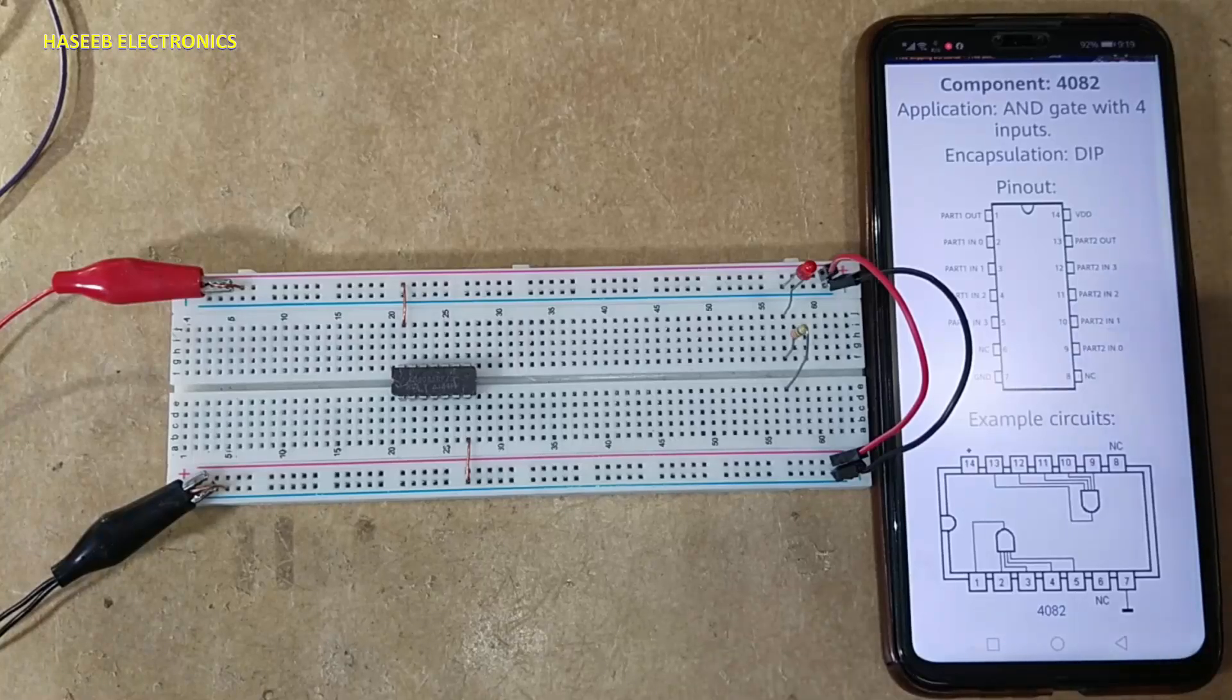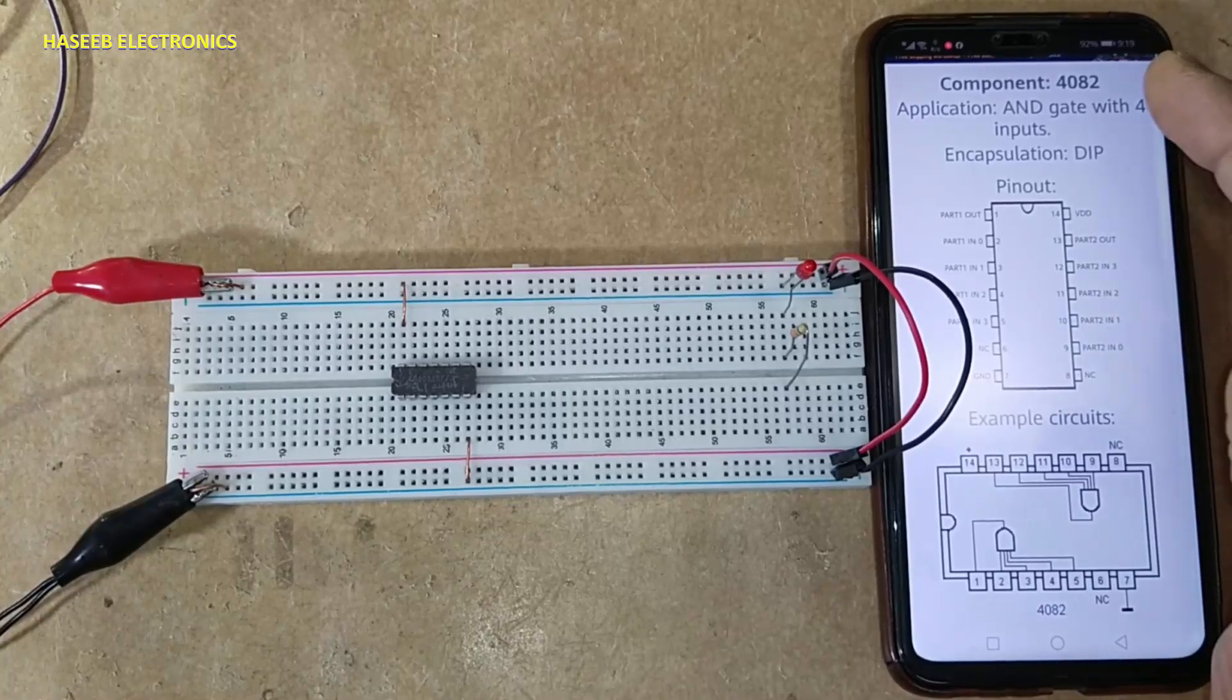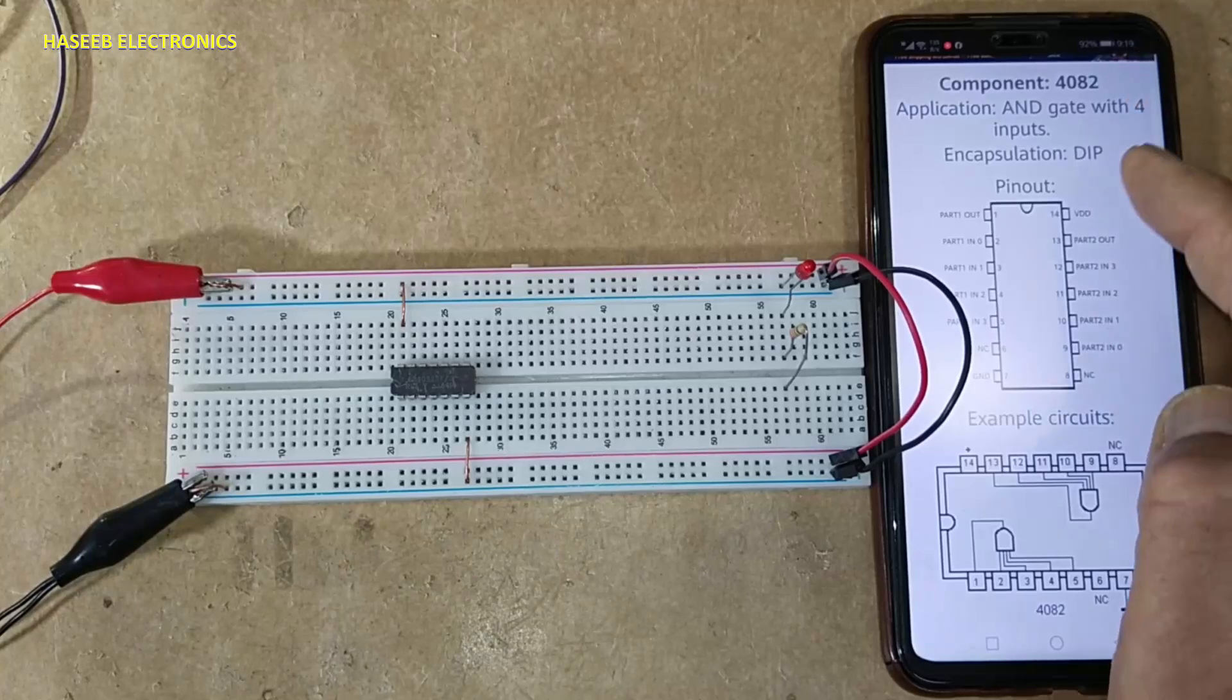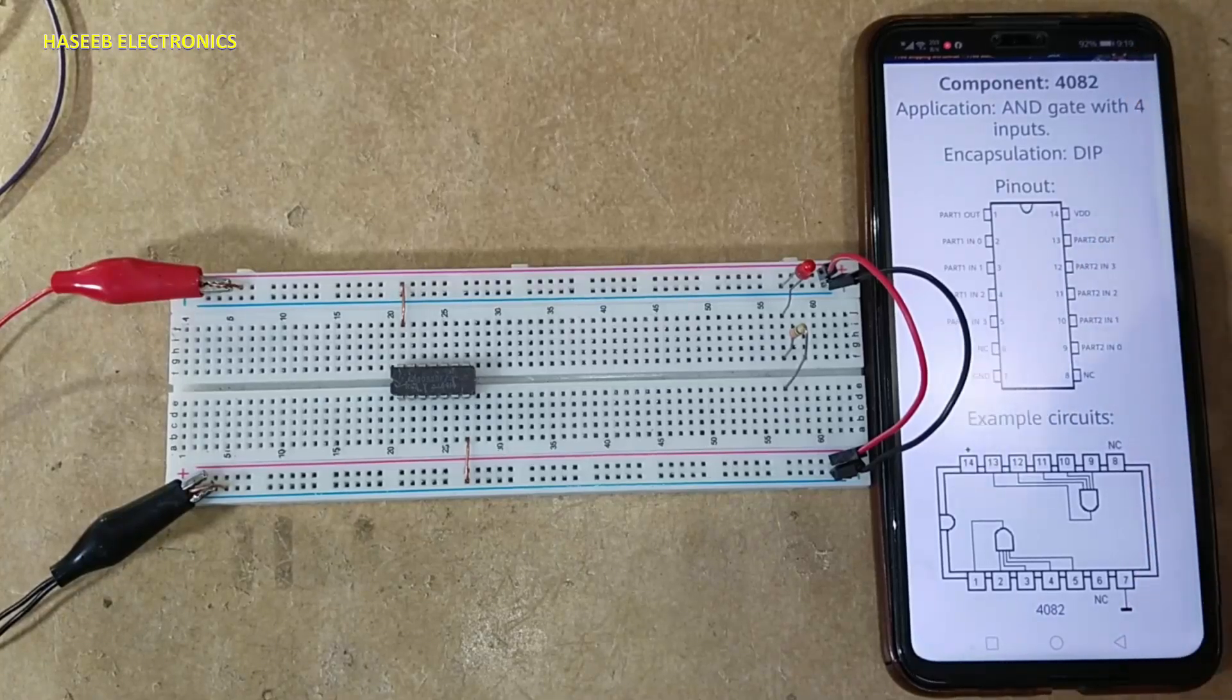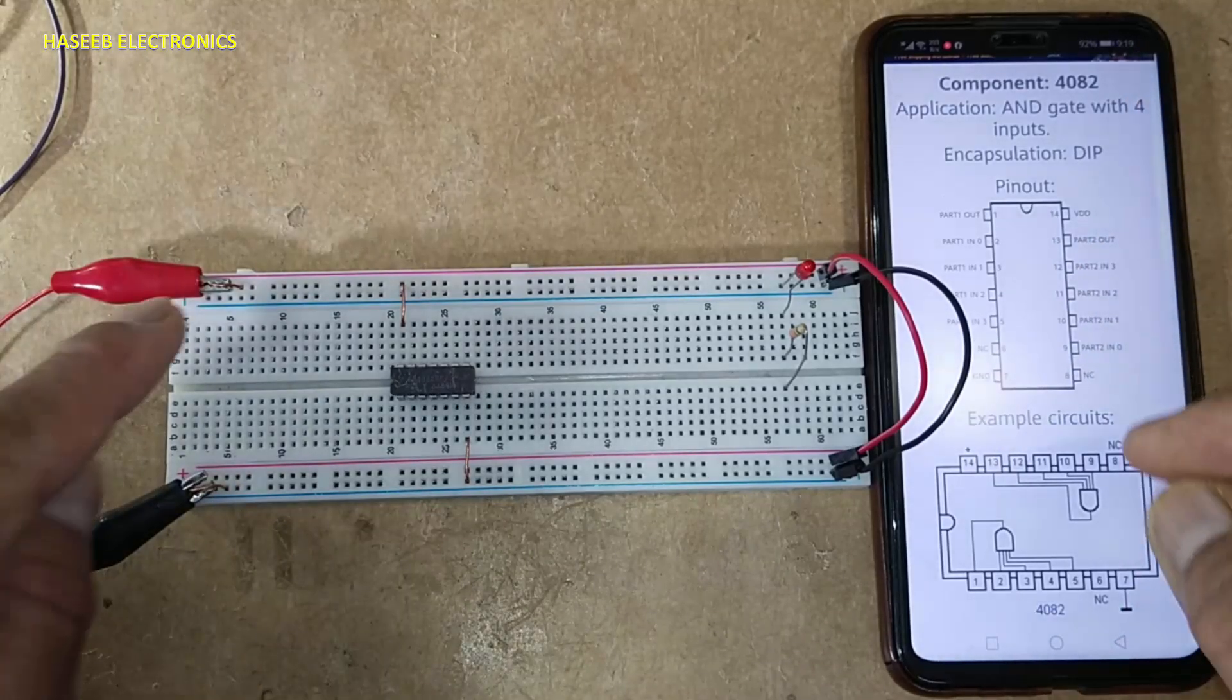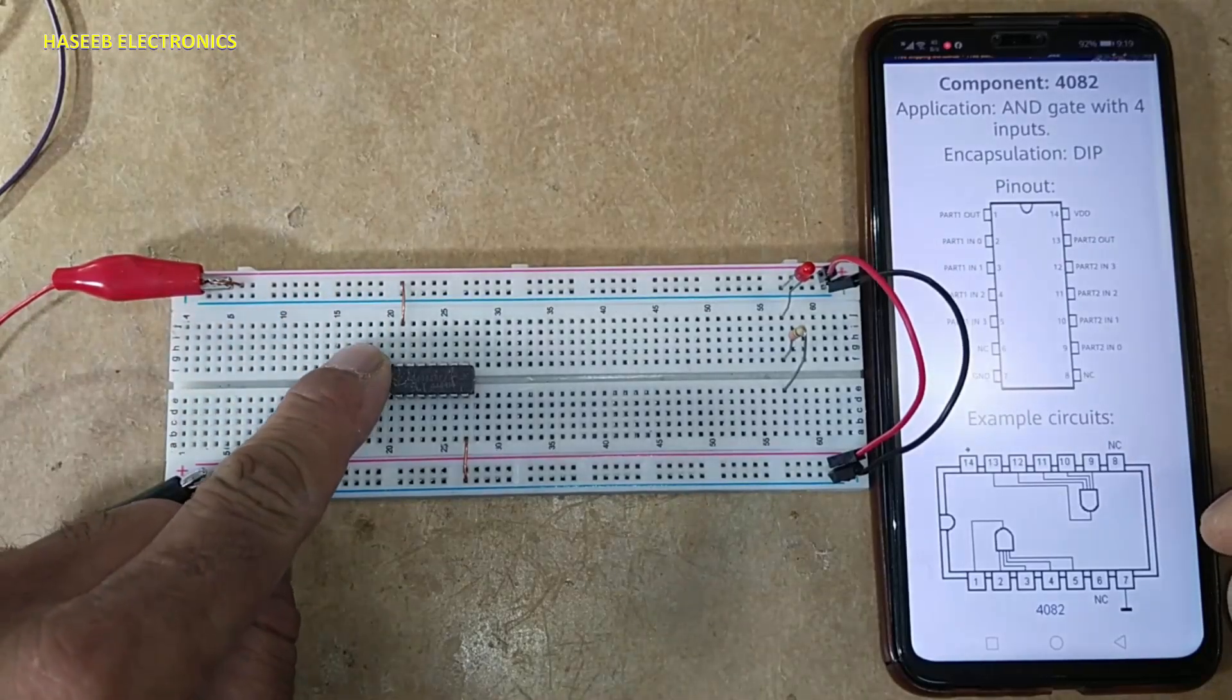Assalamualaikum warahmatullahi wabarakatuhu friends, welcome back to my channel. CD4082 four input AND gate CMOS IC. Pin number 14 is VDD, pin number 7 is VSS ground. Positive voltage applied is 5 volts.